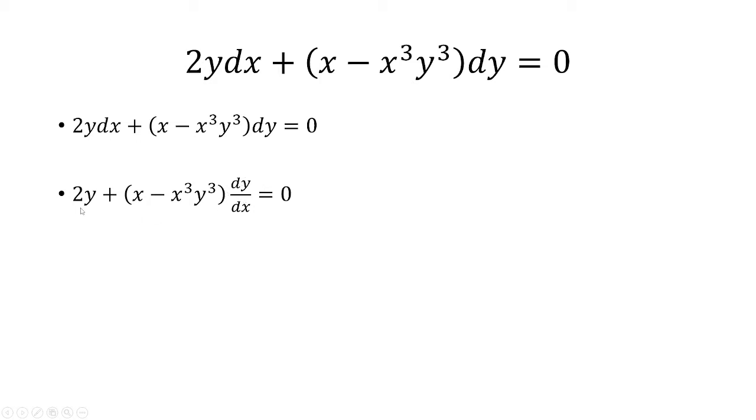Let's first subtract both sides by 2y, and then divide by whatever is inside the parentheses. So now we have dy over dx is equal to negative 2y over x minus x cubed times y cubed.